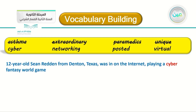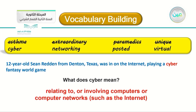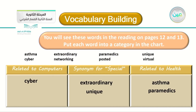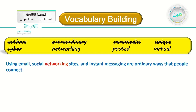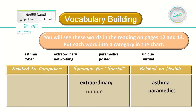The fifth word is 'cyber' — from '12-year-old Sean was playing a cyber fantasy world game on the internet.' Cyber means relating to or involving computers or computer networks such as the internet, so cyber is related to computers. Sixth: 'networking' — from 'social networking sites and instant messaging are ordinary ways that people connect.' Networking means the linking of computers to allow them to operate interactively — so networking is also related to computers.